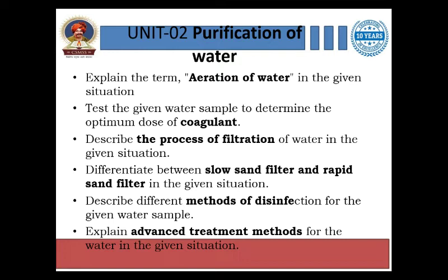Unit 2 is the purification of water. In this unit we will understand the processes by which we can treat water and make it drinkable. Topics include: aeration of water, adding optimum doses of coagulants, the process of filtration, sand filters — slow sand filter and rapid sand filter — methods of disinfection for a given water sample, and advanced treatment methods such as ultraviolet treatment and adding certain minerals to remove impurities that cannot be removed by the above-mentioned processes.